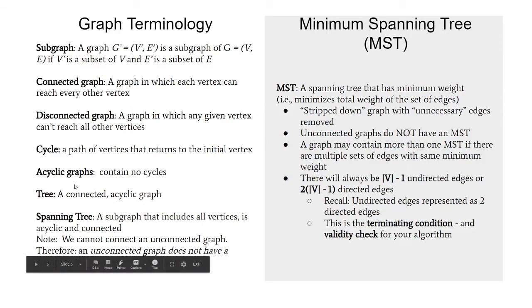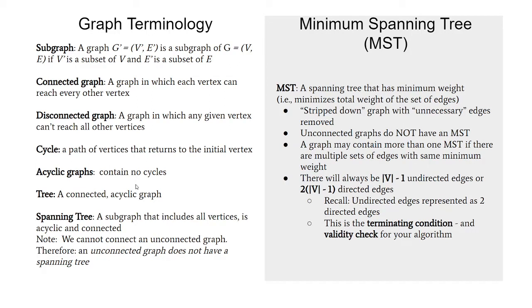If we combine these properties, a tree is just a graph that is connected and acyclic. We just need to meet those two properties and we have a tree. Tree means exactly the same thing it did when we talked about binary trees or BSTs or 2-4 trees — we're not introducing a new word, just introducing it in terms of a new topic. A new word we are going to introduce is a spanning tree of some graph.